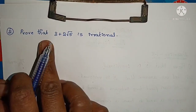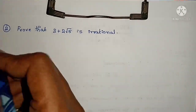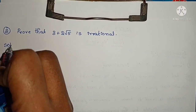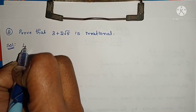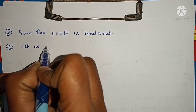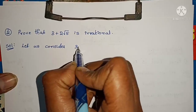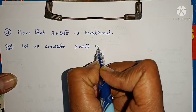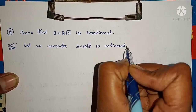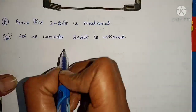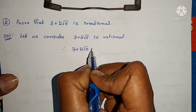Second question: prove that 3 + 2√5 is irrational. Same method. Let us assume that 3 + 2√5 is rational. If it is rational, then we can write 3 + 2√5 = a by b.